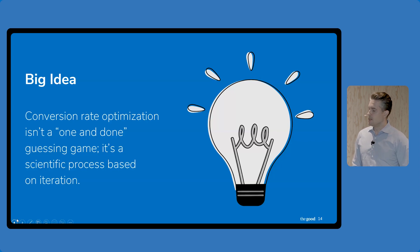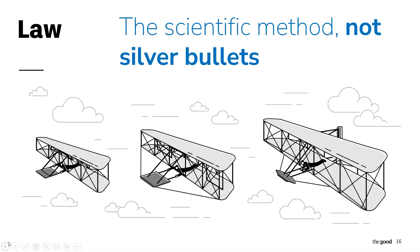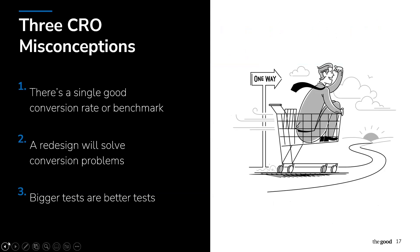CRO isn't a guessing game. It's the scientific process. I keep hitting this home because it's extremely important. It's the underpinnings for true optimization of your site. Let's talk about the system for a second. The next term is a data-backed system. Let's talk about what system means. That takes us to the next law - a scientific method, not silver bullets, is what you need to be paying attention to. The scientific method is what you're going to use to make sense of all that data.